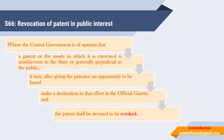Now we are discussing Section 66 — Revocation of Patent in Public Interest. When the Central Government is of the opinion that a patent or the mode in which it is exercised is mischievous to the state or generally prejudicial to the public, the Central Government may, after giving the patentee an opportunity to be heard, make a declaration to that effect in the Official Gazette, and the patent shall be deemed to be revoked. That is, the Central Government, finding a patent which is mischievous or prejudicial to the public, will give notice to the patentee, call for a hearing, and then declare in the Official Gazette that the patent has been revoked.